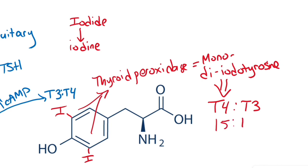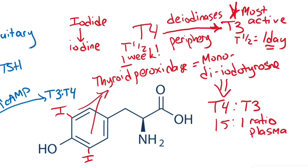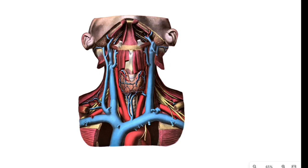Plasma T4 to T3 ratio is 15 to 1 and T4 is converted into T3 by diiodonases in the periphery. T3 is the more active form. The half-life of T3 is one day, whereas the half-life of T4 is one week. Thyroglobulin stores the T3 and T4 in the thyroid.